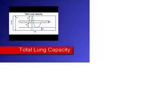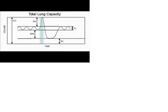The total lung capacity is the amount of gas in the lungs after a maximal inspiration. If you take a big deep breath in and hold it, the volume of gas in your lungs is the total lung capacity. It includes the inspiratory reserve volume, tidal volume, expiratory reserve volume, and the residual volume. Normally, it is about 6,000 mL for adult males and 4,200 mL for adult females.